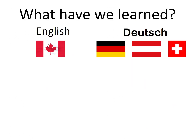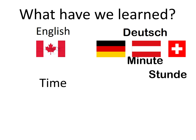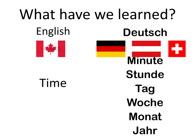Another thing that we learned that was really important is all about time. We learned that the German word for minute looks very much like the English word for minute — Minute. Hour is Stunde. Day we knew from before from Guten Tag — Tag is day. Woche is week. Monat means month. And Jahr means year. Let's try these all together: Minute, Stunde, Tag, Woche, Monat, and Jahr.